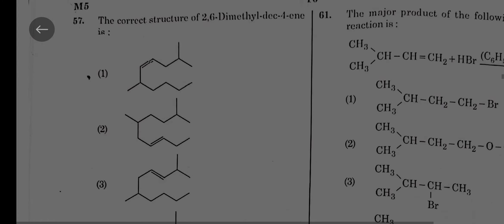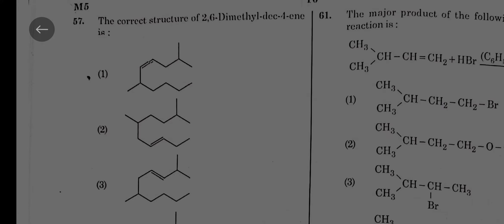The correct structure of 2,6-dimethyl decaphorin: you can see the first option, fourth place double bond is there, second and sixth place methyl. It's an easy question.